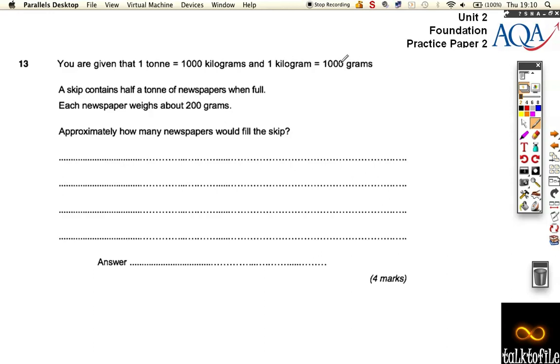Now, you're given some information about kilograms and grams, and you're told that a skip contains half a ton of newspapers. So one skip can hold 500 kilograms, half a ton. If one ton is a thousand, it can hold 500 kilograms.